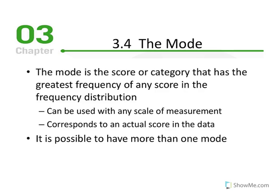when finding the median, given an odd number of scores, it may be an exact x value in our distribution. But when we have an even number of scores, it's the average of the two center scores, which may not be one of the x values. Additionally, if we're working with finding the median of a continuous variable, the x value may not be one of the values in our distribution.